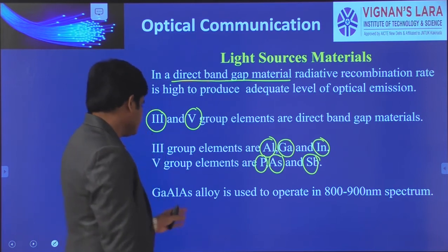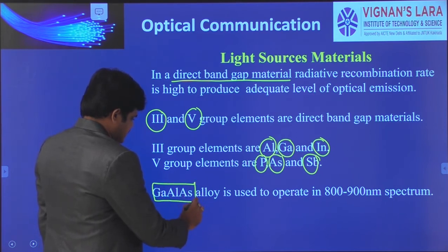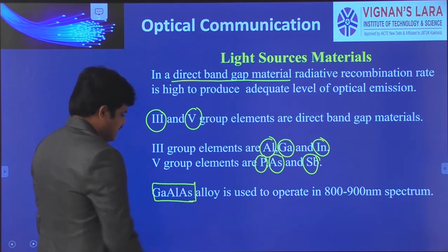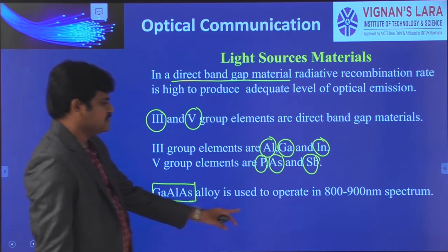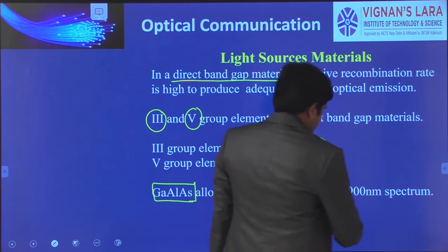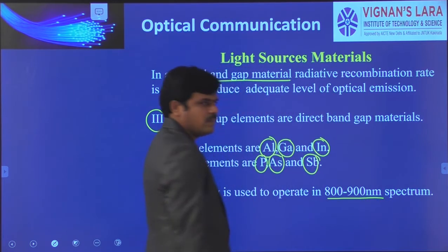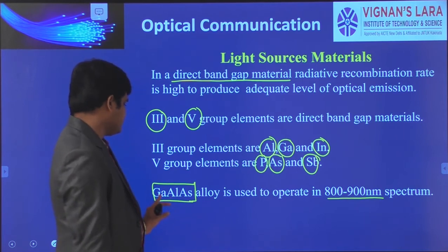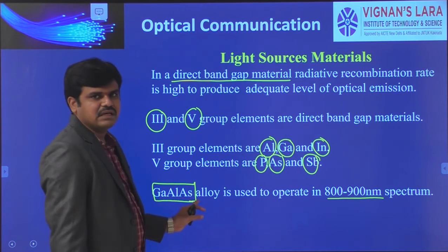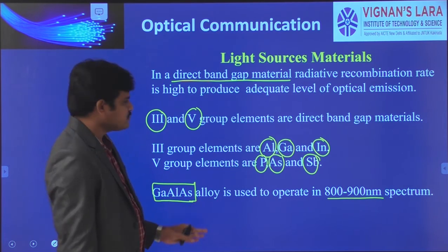Gallium aluminium arsenide (GaAlAs) is an alloy used to operate in the 800 to 900 nanometer spectrum, meaning gallium and aluminium are mixed with arsenide to fabricate LEDs operating in that wavelength range.